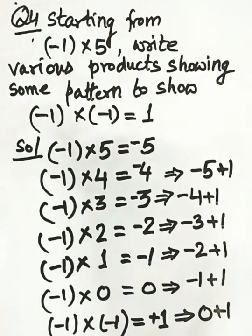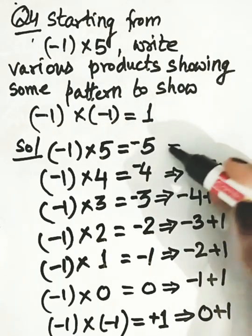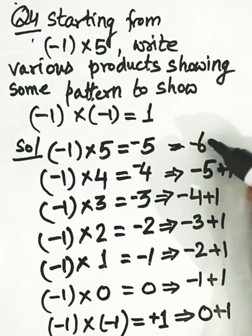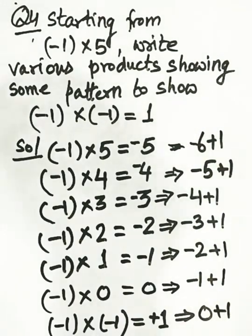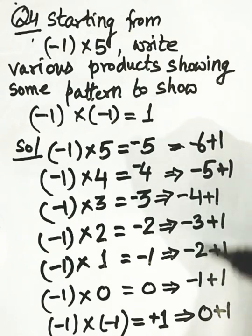So if you look at this, the integer follows the pattern minus 4, minus 5, minus 4, minus 3, minus 2, minus 1, equal to 0. If we talk about minus 5, the previous number is minus 6, and minus 6 plus 1 equals minus 5. So what is our pattern? We generate a formula. We want to add 1 to the integer. Let the integer be n, so n plus 1 gives the next value.